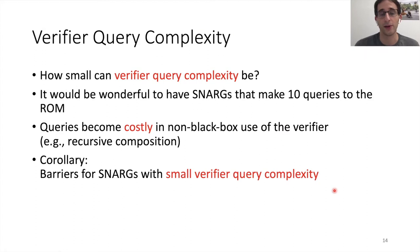We said that our two results imply barriers for SNARGs in the random oracle model. These barriers are going to be in the form of barriers on the verifier query complexity. So let's think for a minute. How small can the verifier query complexity be? It would be really wonderful to have SNARGs where the verifier makes 10 queries to the random oracle. This is in particular important when you make non-black box use of the verifier. So you need the code of the verifier where you replace the random oracle with some instantiation, some hash function, then every query really blows up the code to be huge. This is in particular important when we talk about recursive composition.